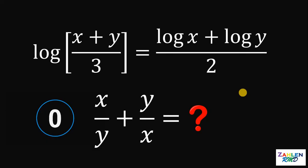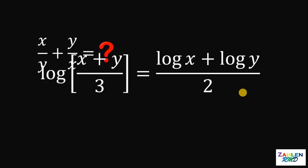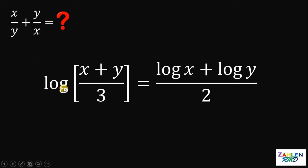And now, let's answer this question together. Given that logarithm of x plus y over 3 equals logarithm of x plus logarithm of y over 2, and our goal is to solve for the value of x over y plus y over x, how are we going to answer this kind of question?